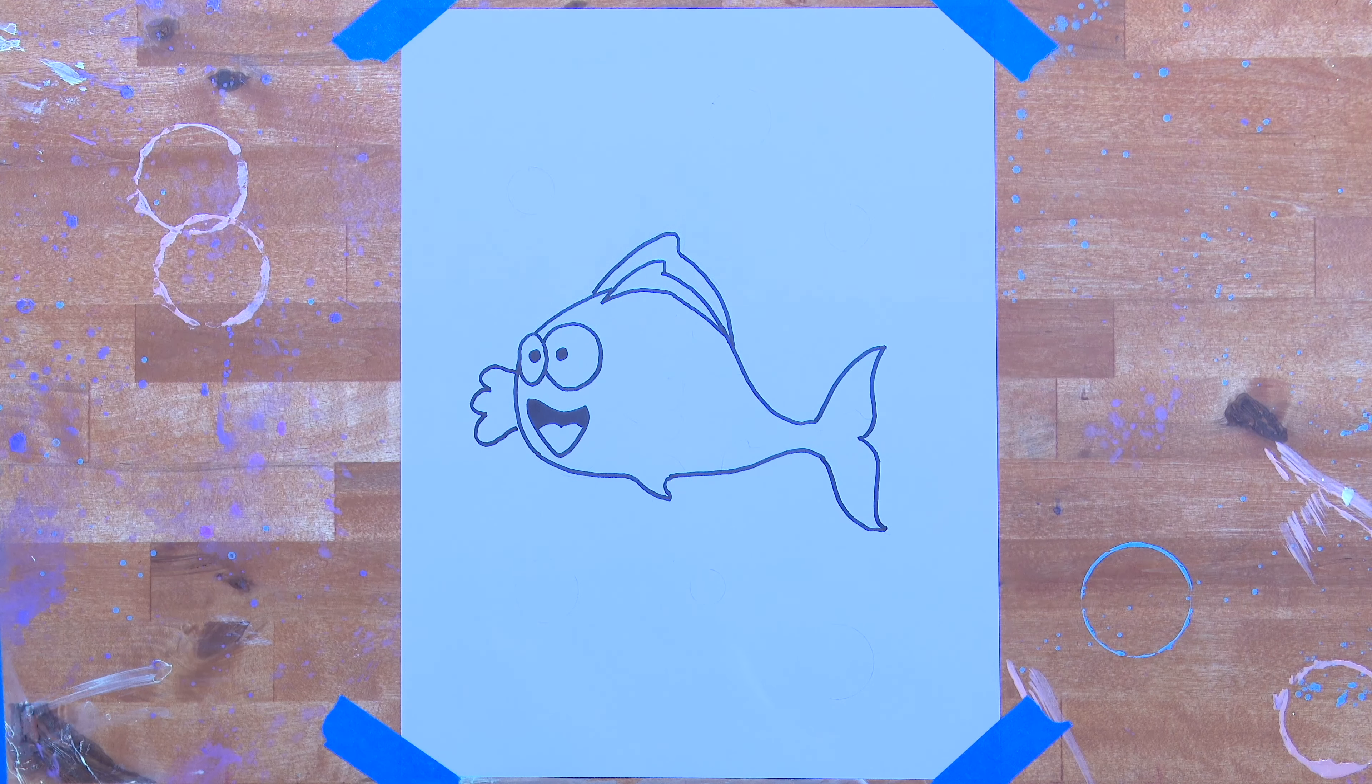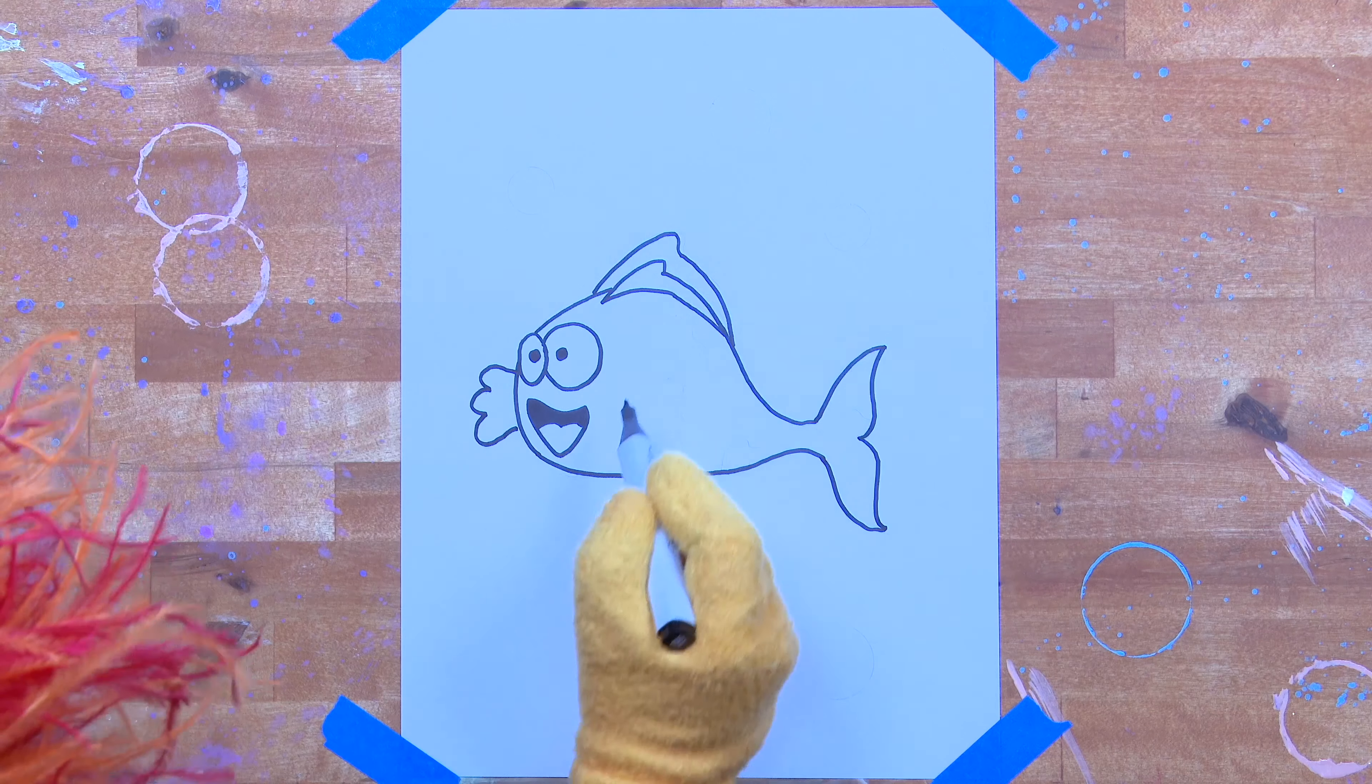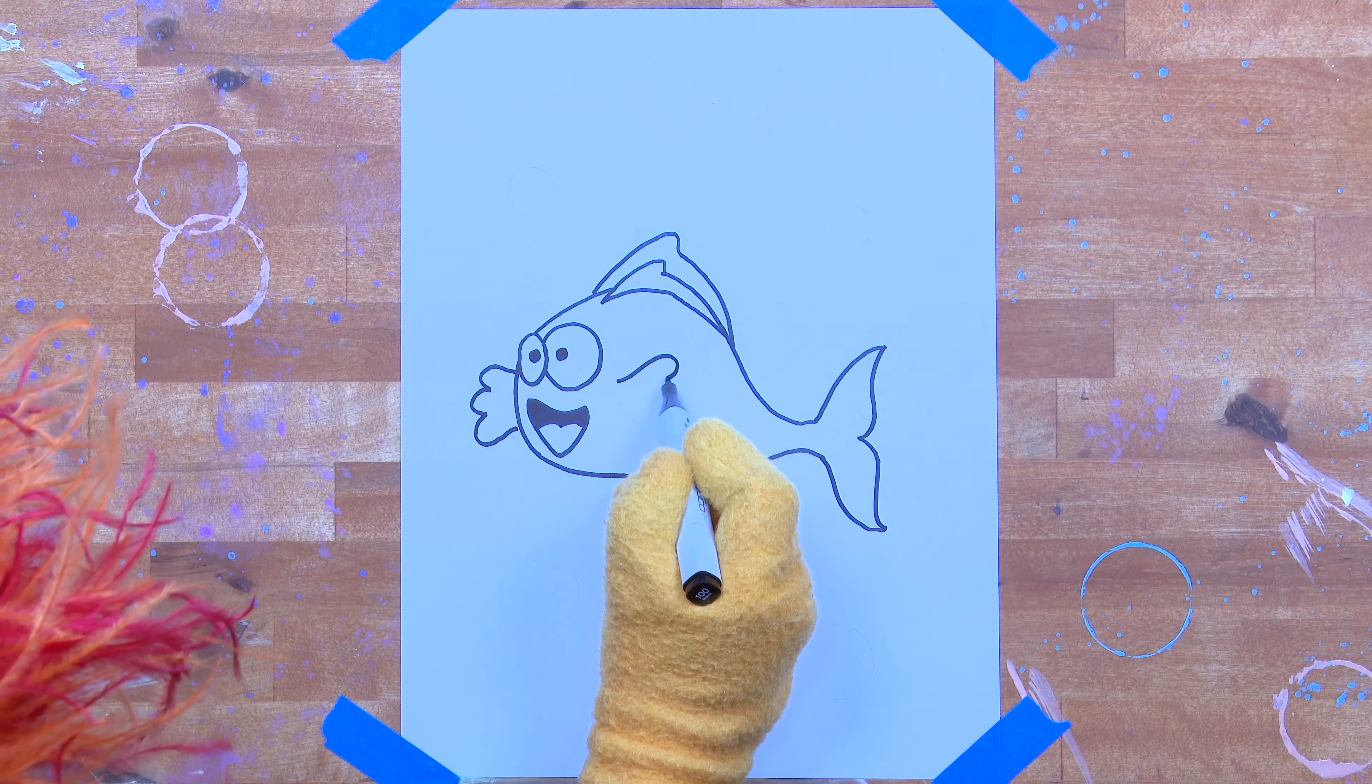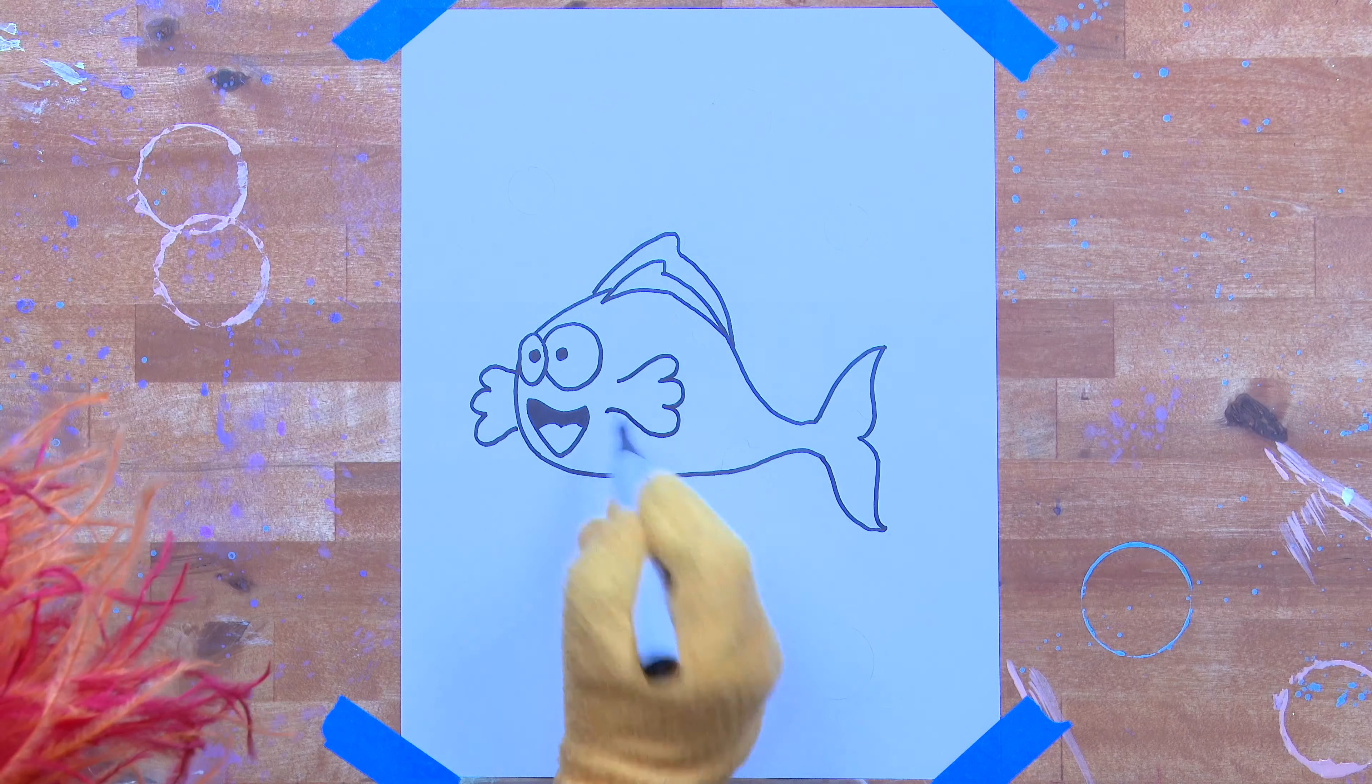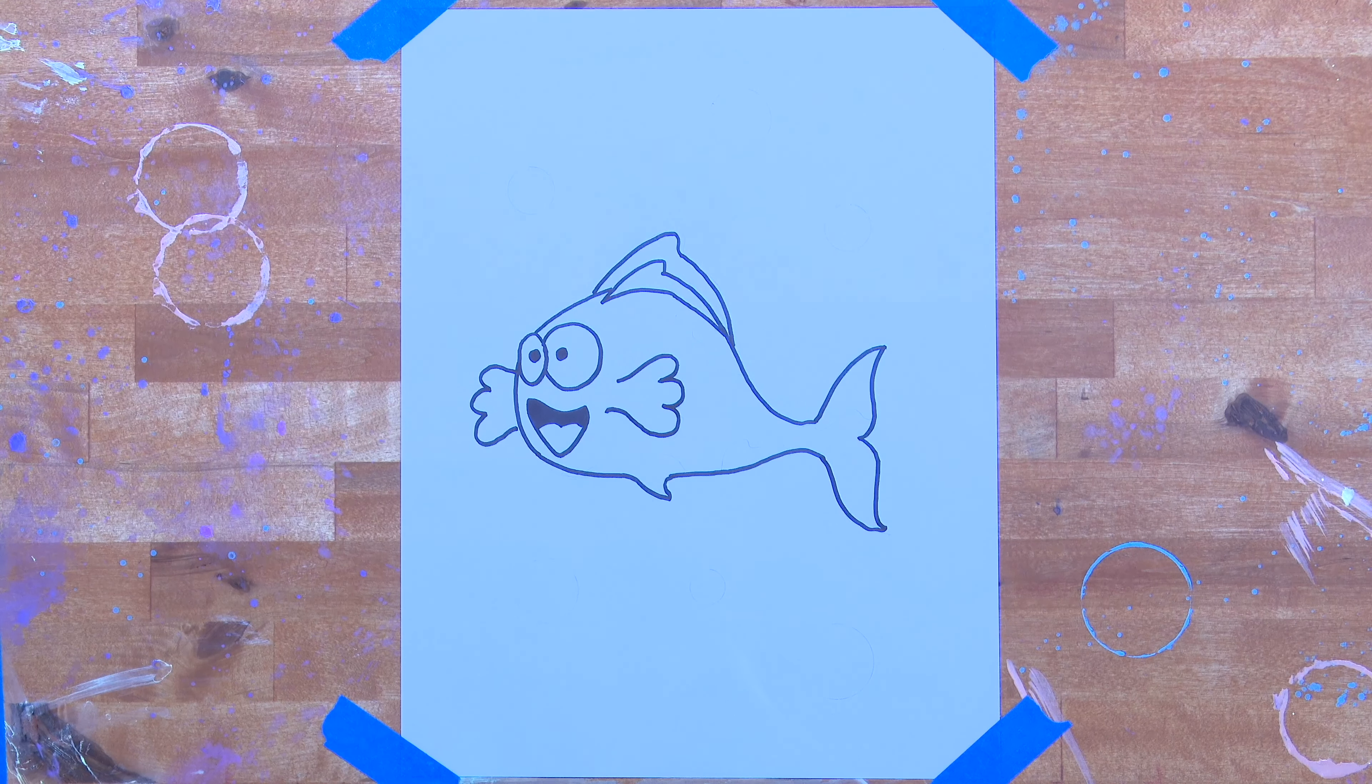Now let's do the sort of fin arm on the left. Is it an arm? Or is it a fin? Nobody knows. Let's do another one on the right. This is how the fish swims through the water. He waves his little arm fin wing things.